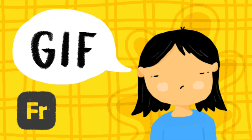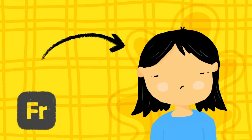Hello and welcome back to this channel. In today's tutorial we're going to learn how to create an animated GIF with a transparent background in Adobe Fresco. I'm going to be drawing a cute little girl. I'll also show you how to draw a boy instead of a girl, and you can also do a self-portrait. Let's just get started.